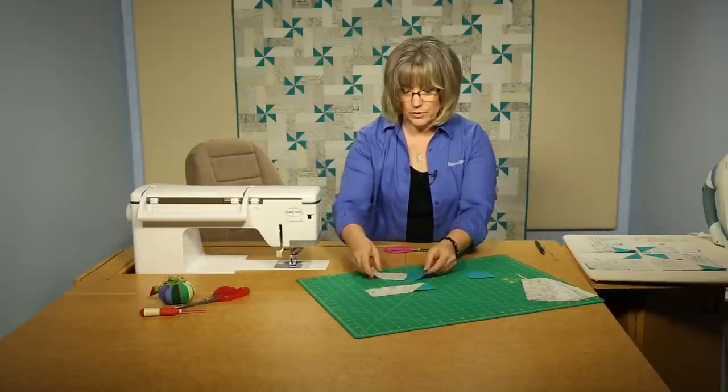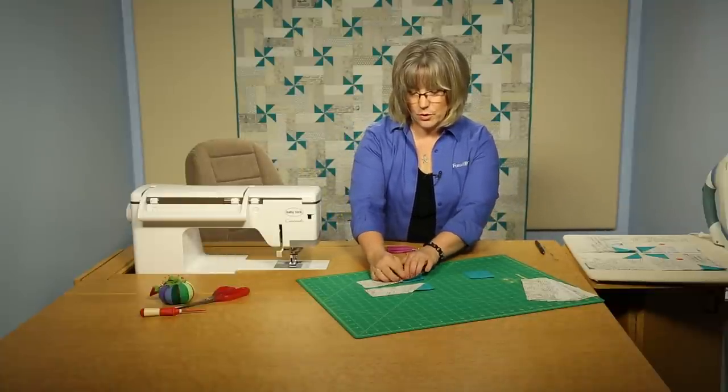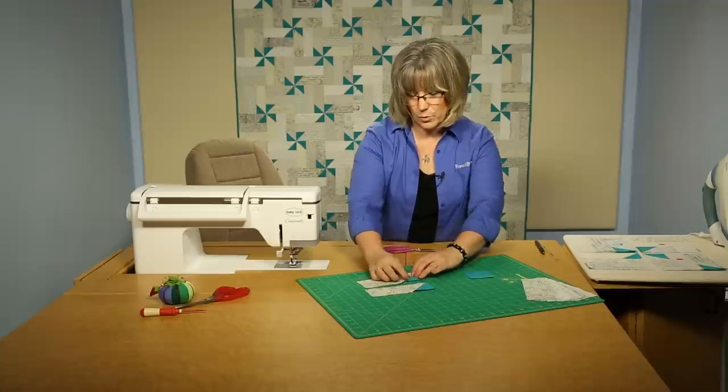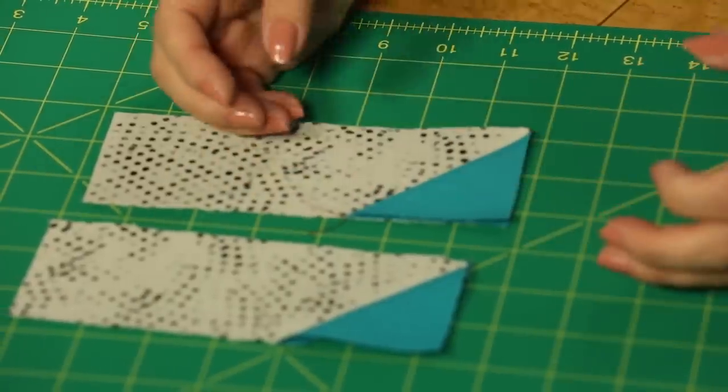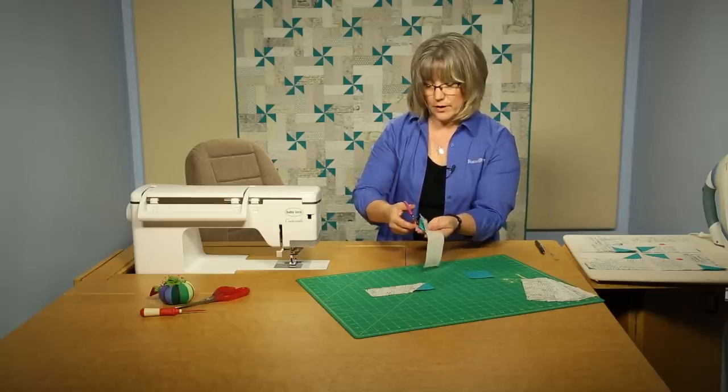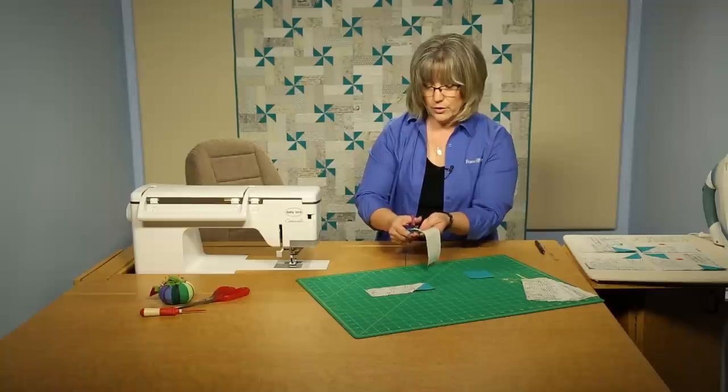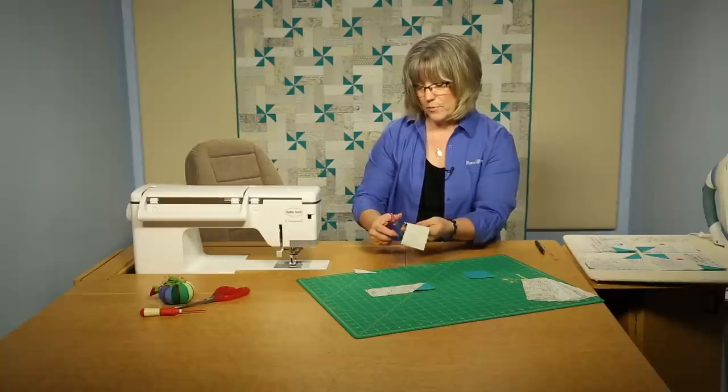Okay, now that we've gotten that seam in there, we're going to press open. You would take that to the ironing board. I'll just do it with my fingers here, and open it all the way up, and then go to the back side and trim away the excess fabric. We only need one layer in that space, not three, so we're going to trim that away.